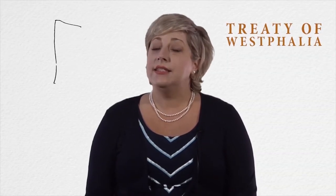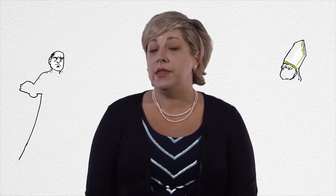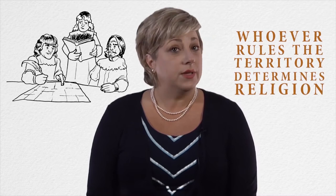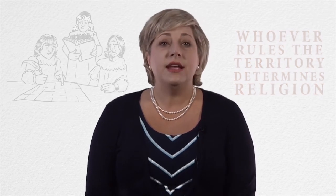The Treaty of Westphalia, signed in 1648, marked the end of the Thirty Years' War, which has been estimated to have killed nearly 30% of the German population. One of the chief causes of the war was the issue of religious autonomy within European principalities, and many consider this war to be the last major European war of religion. To prevent another such devastating war, the Treaty's signatories agreed to a principle that whoever rules the territory determines the religion. The Treaty was a turning point, helping to create our modern system of state sovereignty — cementing the territorial integrity and legal equality of all nation-states and prohibiting the interference of one state into the internal affairs of another.